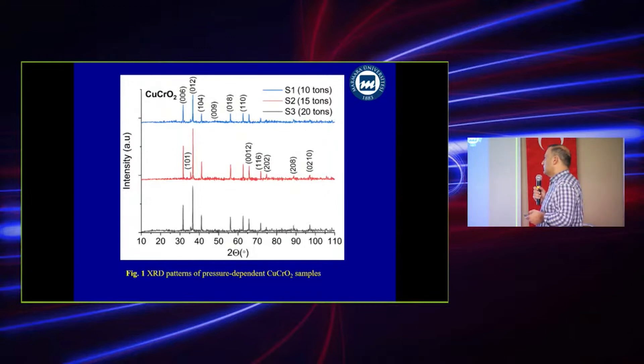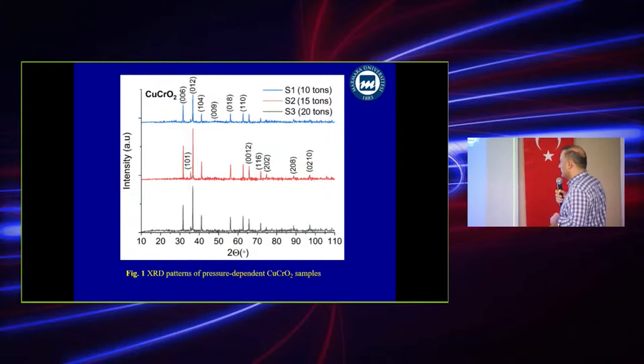We made the samples and separated them into three parts. Samples S1, S2, and S3 are the same things, but the only different thing is the pressure. S1 applied 10 tons, S2 is 15 tons, S3 is 20 tons. In XRD you see on the figures, we haven't seen any very important variation in XRD. Almost everything is the same.